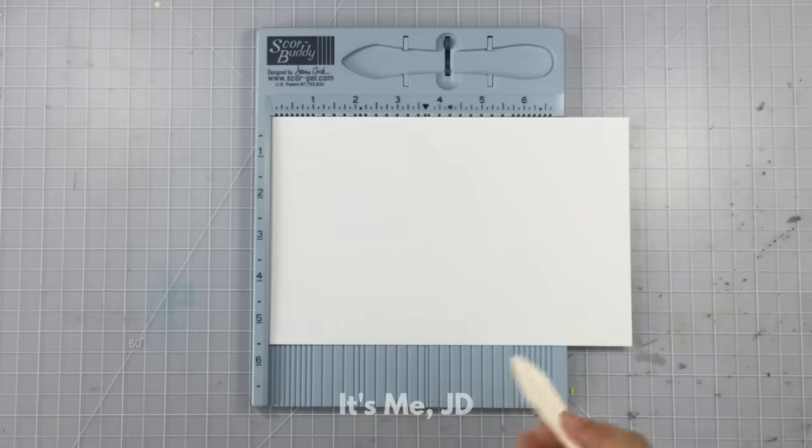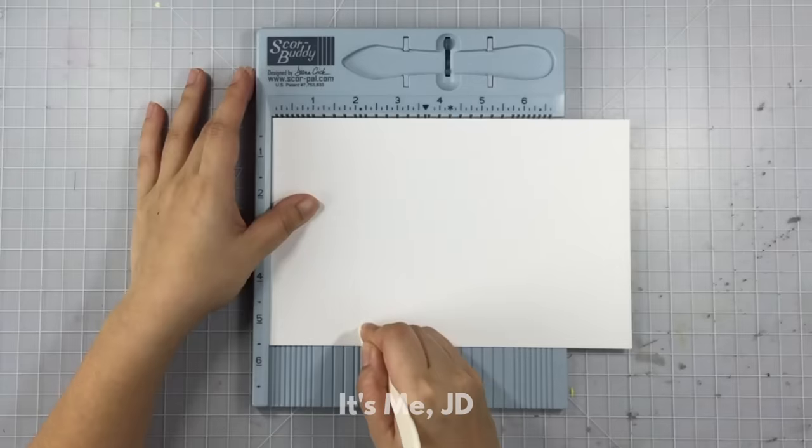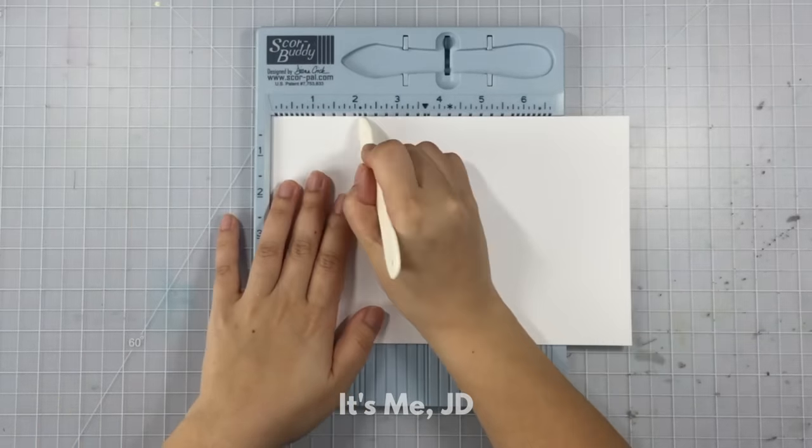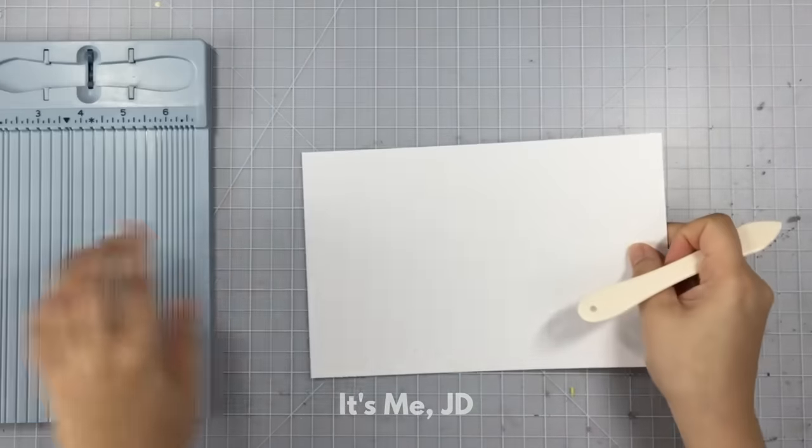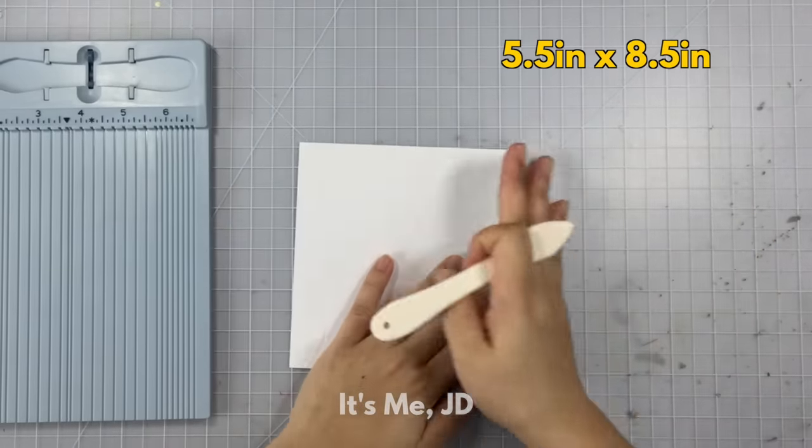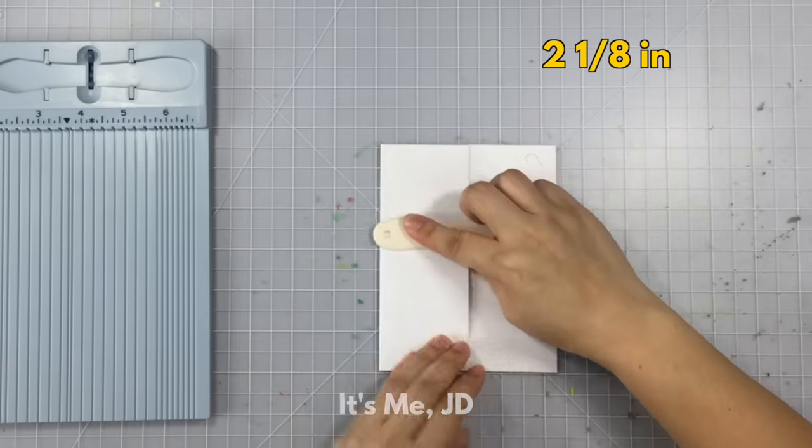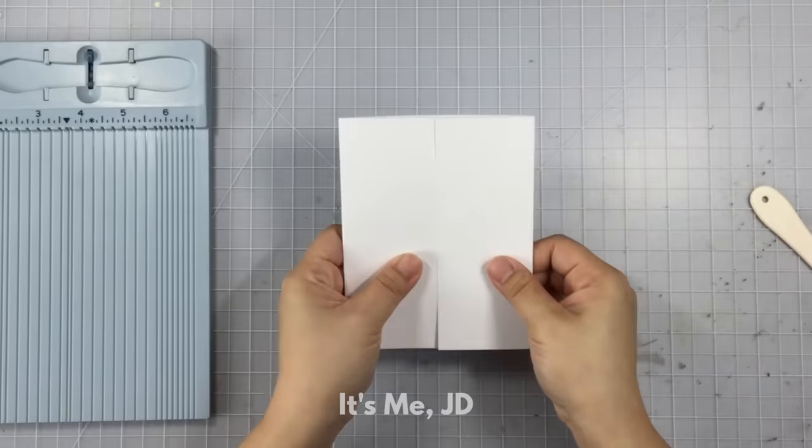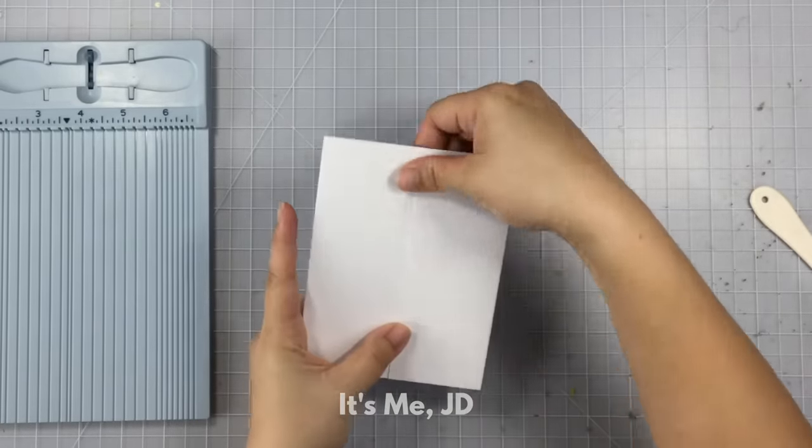To the first method, I'm going to start off by demonstrating your basic gatefold card. Every one of these gatefold cards will require some kind of scoreboard or a bone folder just to make sure you get nice crisp folds in your cardstock. For my five and a half by eight and a half inch piece of cardstock, I made score lines at two and one eighth inch on the left side and the right side, and then I fold either side towards the middle. This gives me a nice even basic gatefold card.